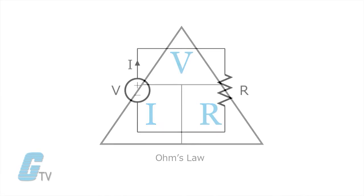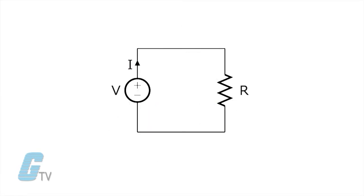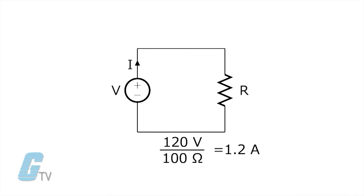In the case of an electrical circuit with a 120-volt input and a resistor with 100 ohms of resistance, the current would be calculated as 1.2 amps, since current equals voltage over resistance.